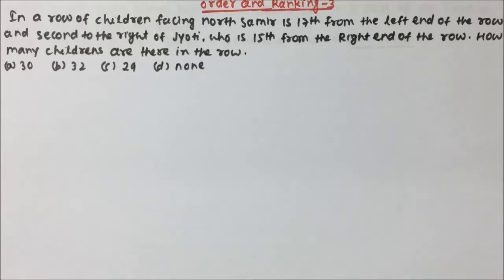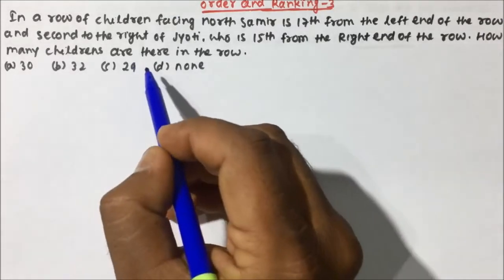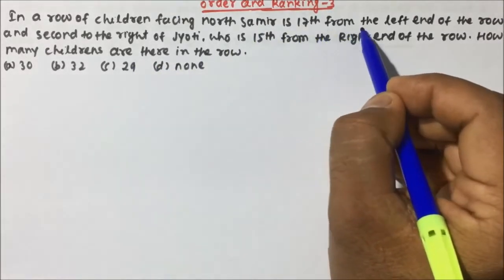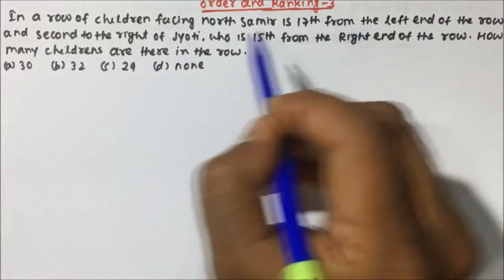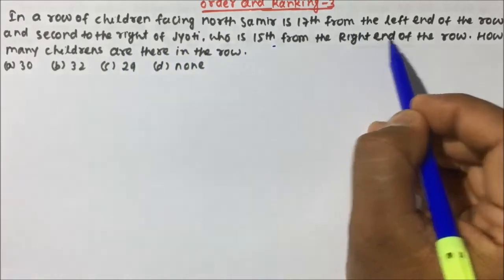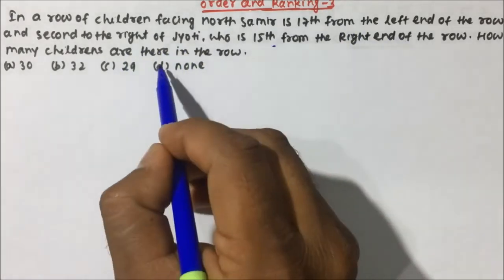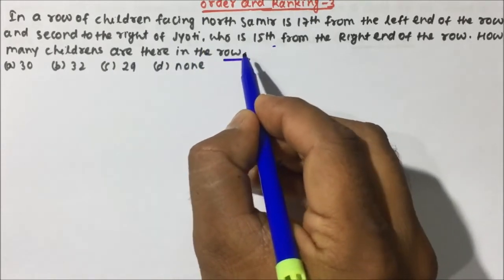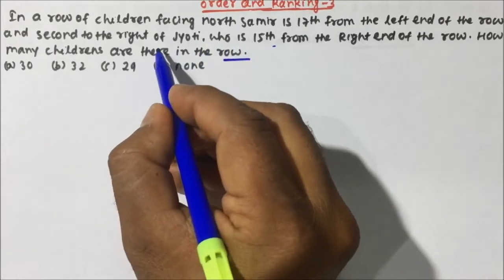Before that, I will suggest you to watch the Order and Ranking basic video so that you understand the concept we are going to use in this question. In a row of children facing north, Samir is 17th from the left end of the row and second to the right of Jyoti, who is 15th from the right end of the row. How many children are there in the row? This is one of the very important questions.